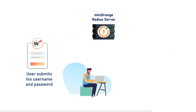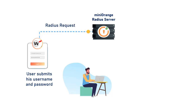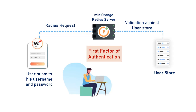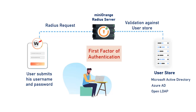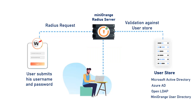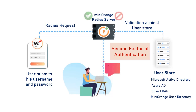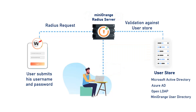The user submits his username and password, which is accepted by the Mini Orange Radius server as a Radius request. The user can be validated against any user directory like Microsoft Active Directory, Azure AD, OpenLDAP, or you can keep users in the Mini Orange user directory as well. After the first level of authentication, Mini Orange prompts the user with two-factor authentication and grants or revokes access based on the 2FA input by the user.